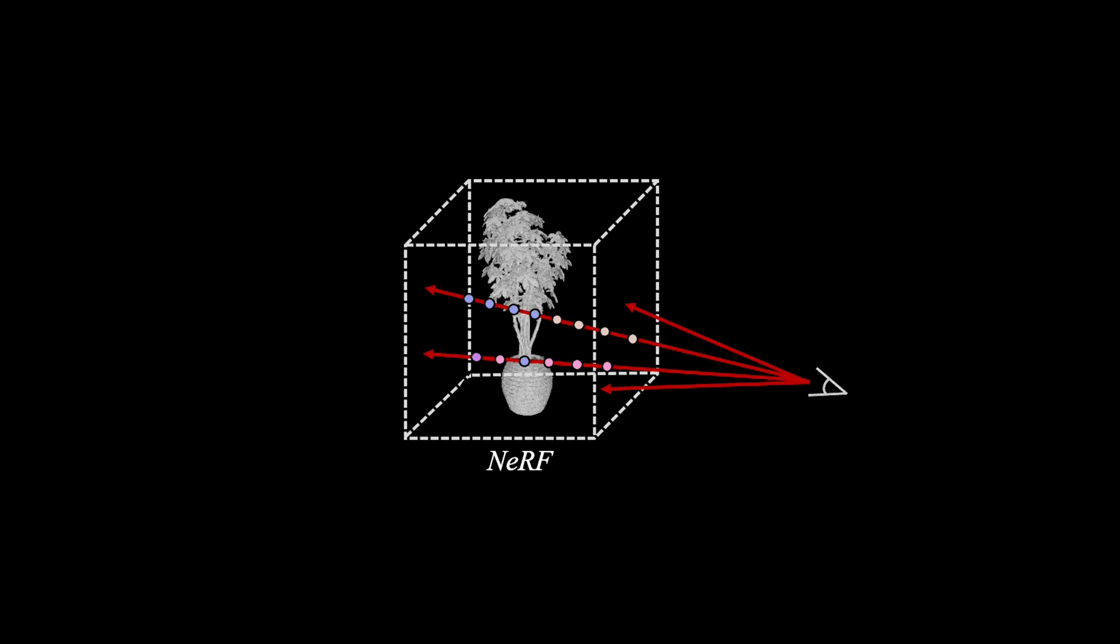To avoid the dense sampling along each ray, one simple solution is to generate a geometry proxy from a pre-trained NeRF model. Then we could directly bake the appearance on the geometric surface.